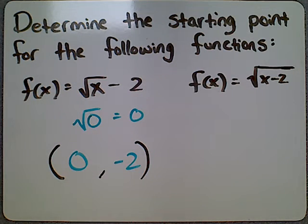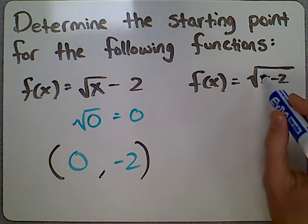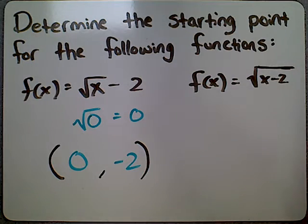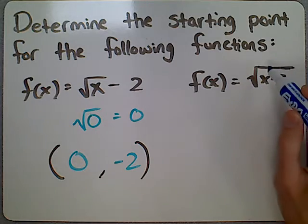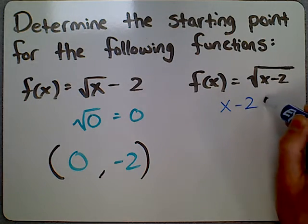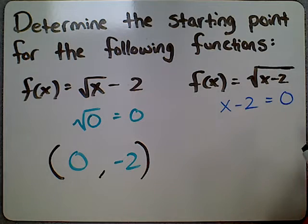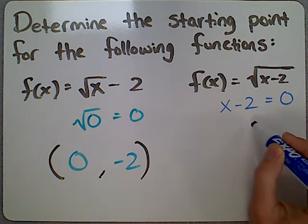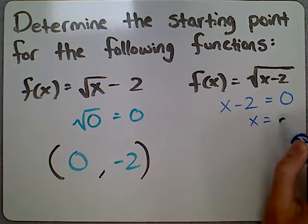In the next situation, what you have here is x minus 2 under the radical. So in this case, we're looking to see what would x have to be that would make x minus 2 equal to 0. So add 2 to both sides, and we would get x equals positive 2.